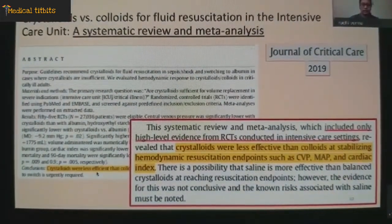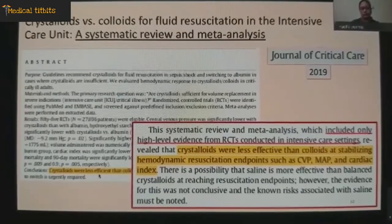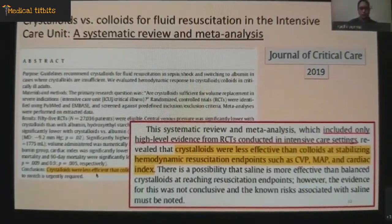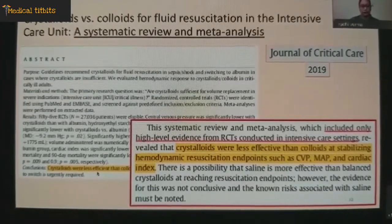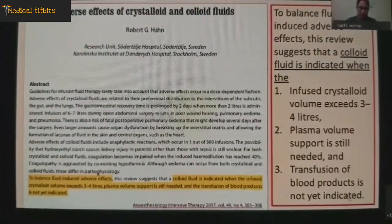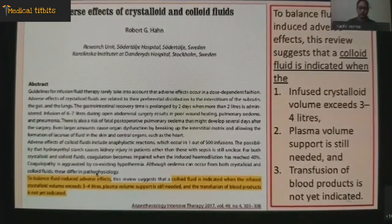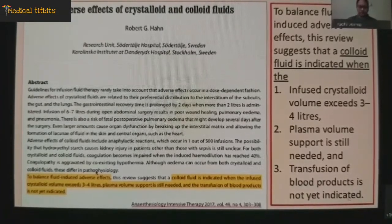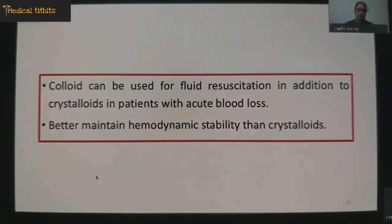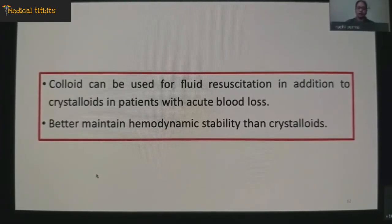FFP should be administered only to correct coagulation defects. Albumin is available in 5% and 25% solutions; it is expensive and no proven advantage over other colloids has been established in neurosurgical patients. A recent systematic review found that colloids were better at maintaining hemodynamics compared to crystalloids in critical care patients. Another review suggests colloid fluid is indicated when infused crystalloid volume exceeds 3 to 4 liters and plasma volume support is still needed but transfusion of blood products is not yet required. Colloids can be used for fluid resuscitation in addition to crystalloids in patients with acute blood loss and better maintain hemodynamic stability.